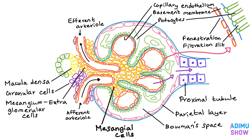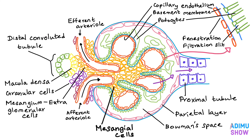The granular cells, macula densa, and extraglomerular mesangial cells constitute the juxtaglomerular apparatus. The juxtaglomerular granular cells have been shown to contain renin. The thick end of the ascending limb of the loop of Henle reaches the glomerulus of the nephron and starts the distal convoluted tubule at the macula densa.